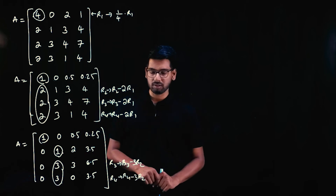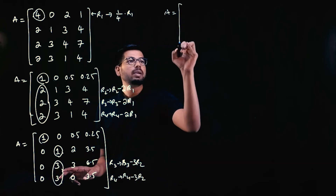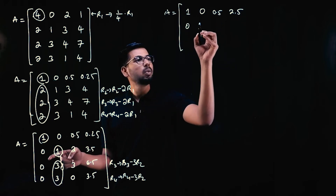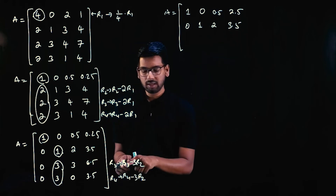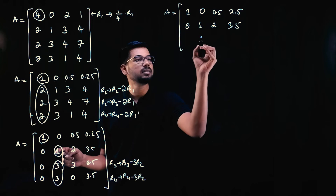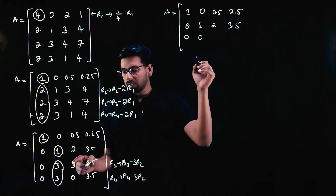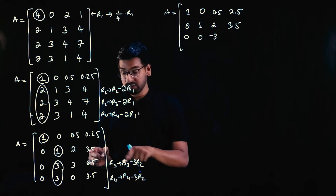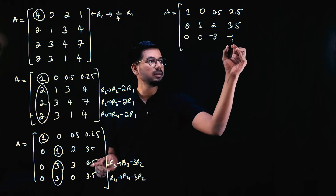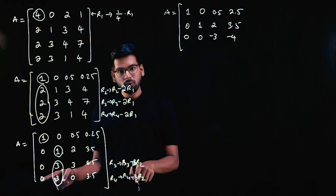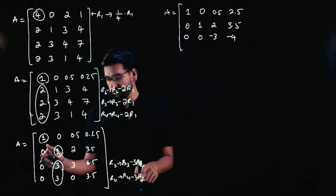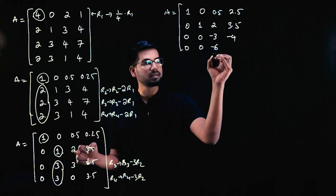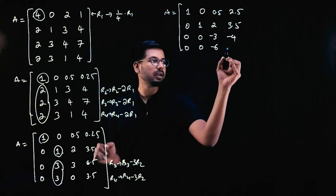So after these row operations, A matrix will now be: Row 1: 1, 0, 0.5, 0.25. Row 2: 0, 1, 2, 3.5. Row 3 (R3 minus 3×R2): 0, 0, 3−3×2=−3, 6.5−3×3.5=−4. Row 4 (R4 minus 3×R2): 0, 0, 0−3×2=−6, 3.5−3×3.5=−7.